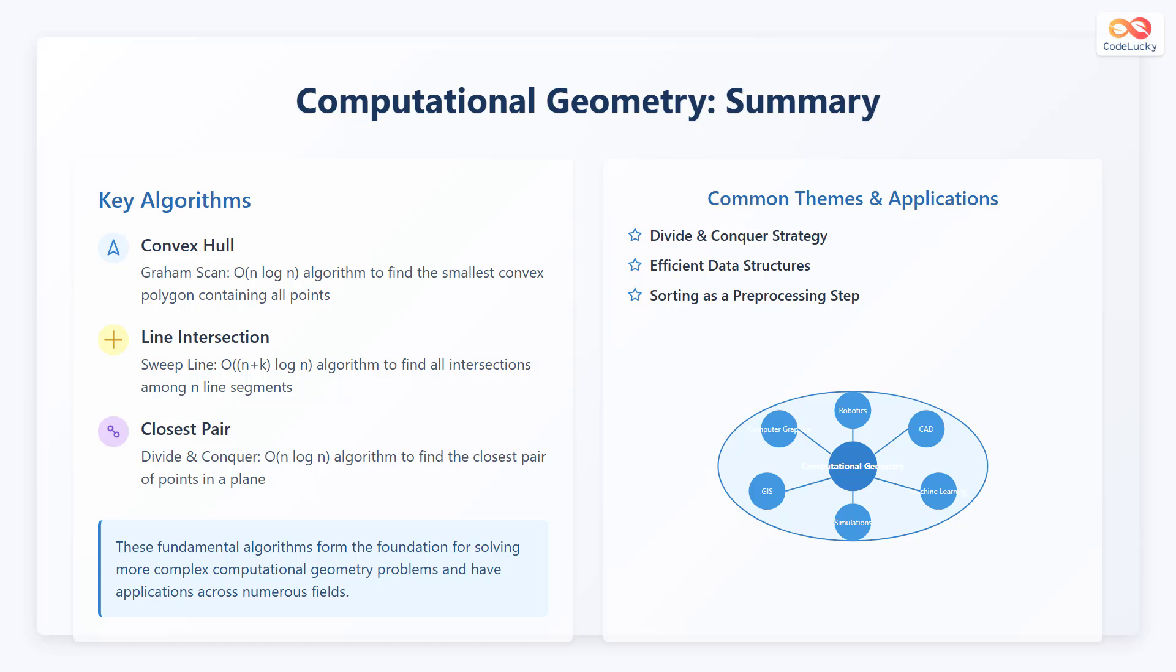The third is the closest pair, using the divide and conquer algorithm with O(N log N) to find the closest pair of points in a plane. These fundamental algorithms form the foundation for solving more complex computational geometry problems and have applications across numerous fields.